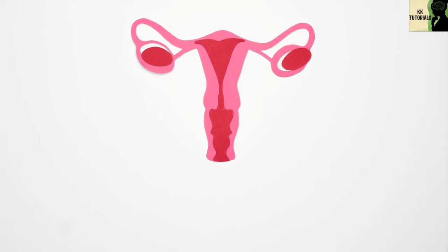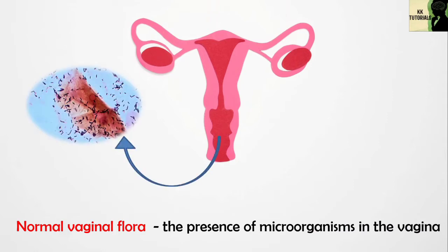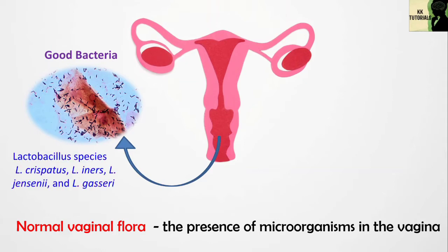Normal vaginal flora is the presence of microorganisms in the vagina. The vagina contains many good bacteria which are important to keep the vagina healthy. These good bacteria consist mainly of lactobacillus species, most common being L. crispatus, L. iners, L. gensini, and L. gasseri. This healthy environment is always maintained by the lactobacillus.